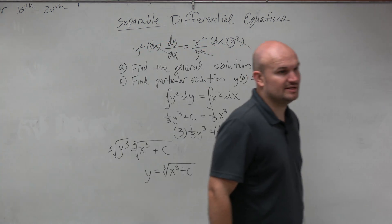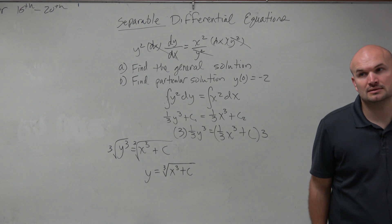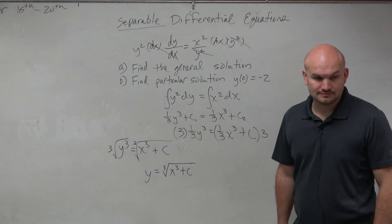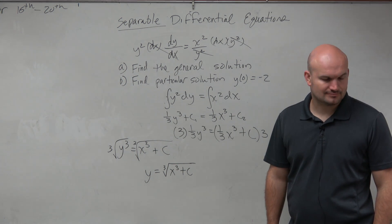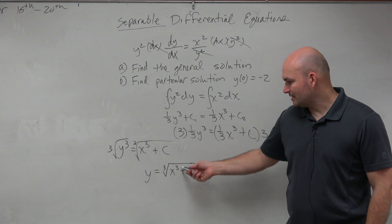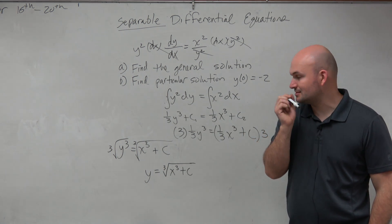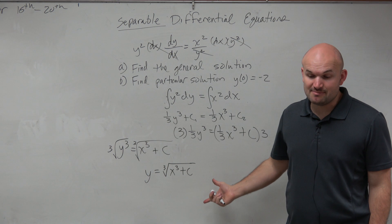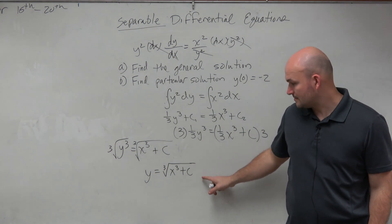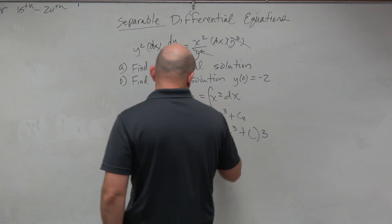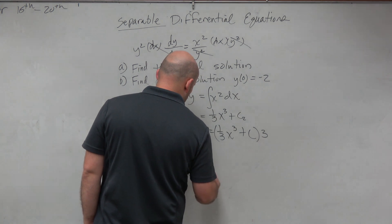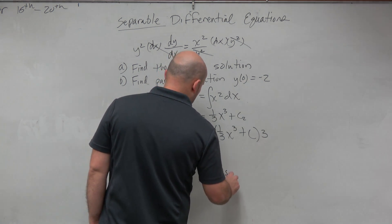Now, in this case, can we just not worry about the c? Well, couldn't you break it apart like cube root of x plus cube root of c? You can't break it apart because it's separated by addition. So here, the c makes all the difference. So this is what we call our general solution. And that's part A.